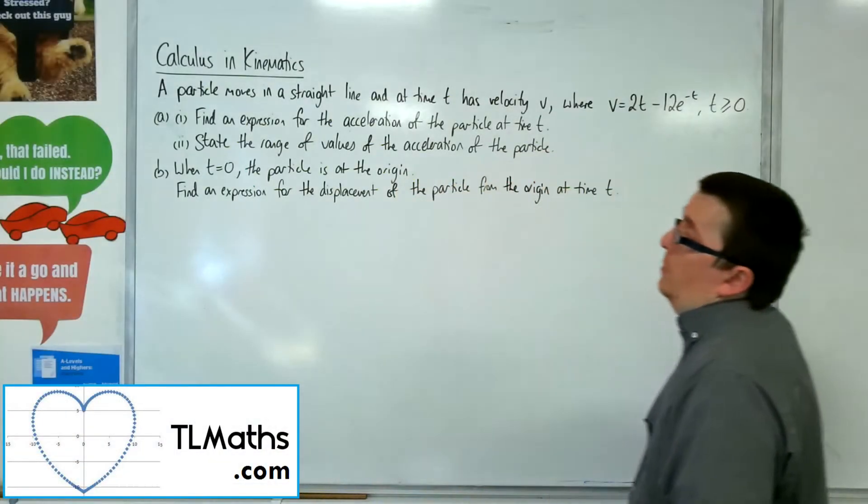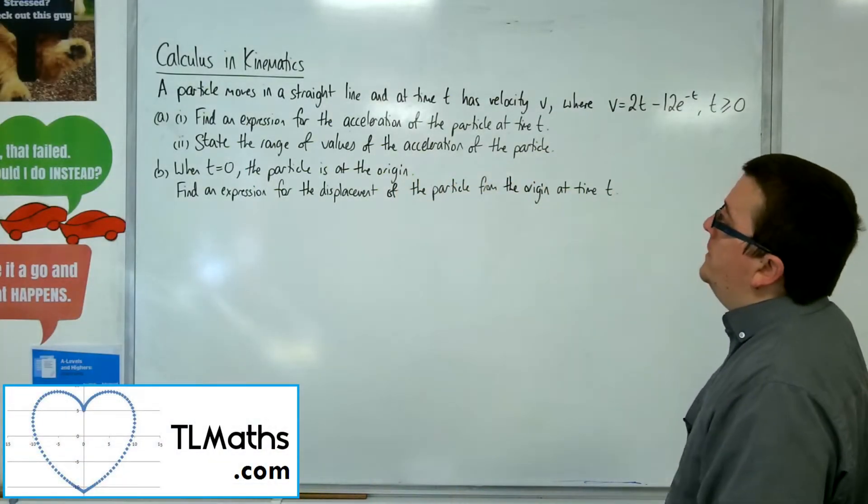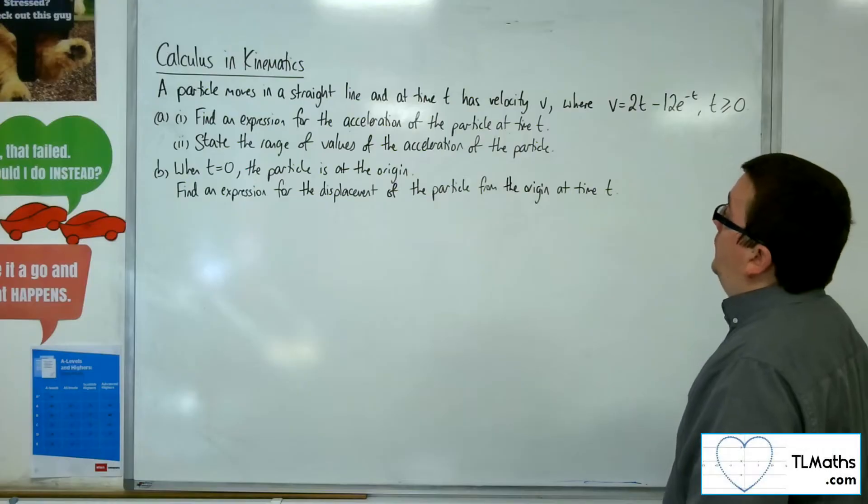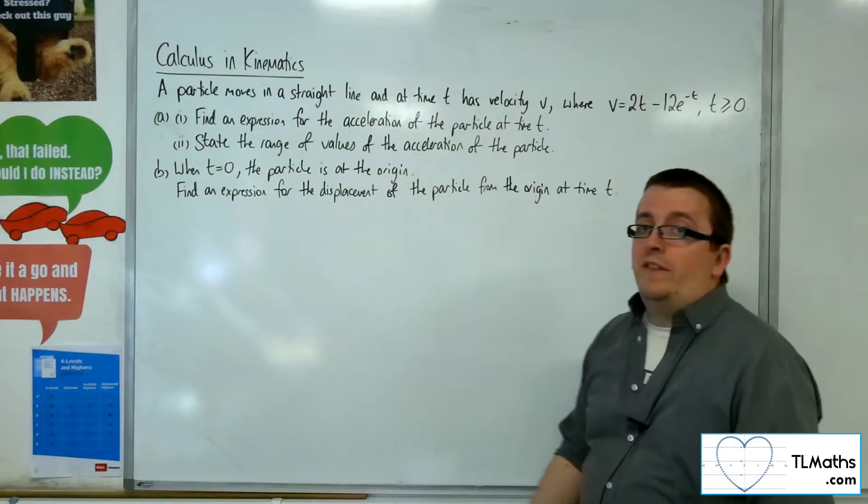So in this video, we're going to look at this problem. A particle moves in a straight line, and at time t has velocity v, where v equals 2t take away 12e to the minus t, where t is greater than or equal to 0.